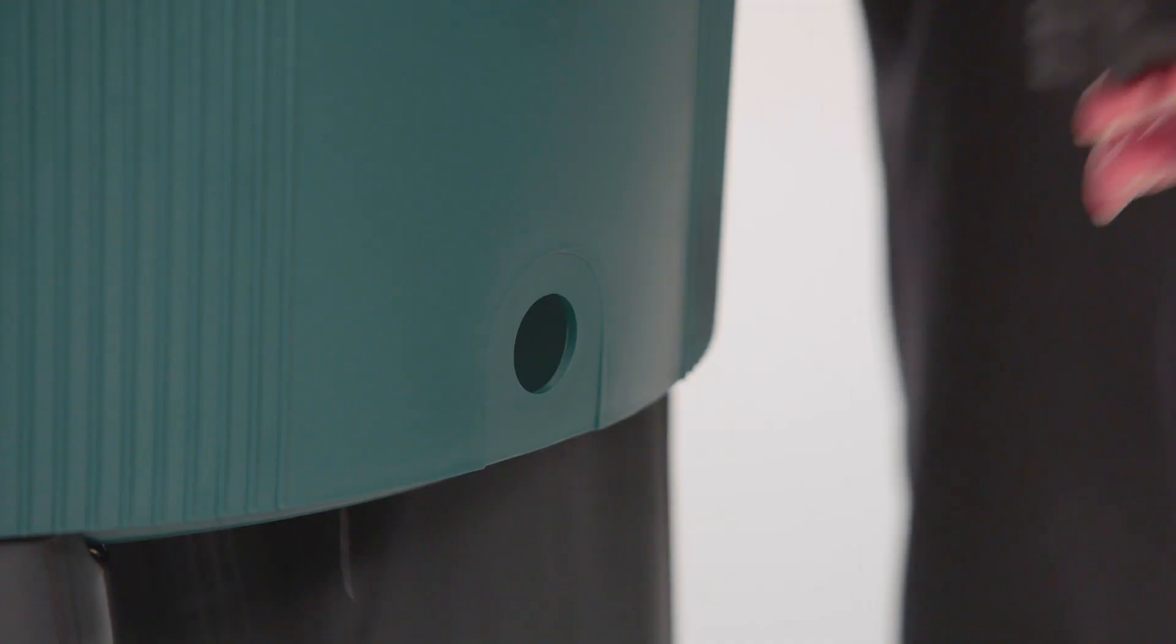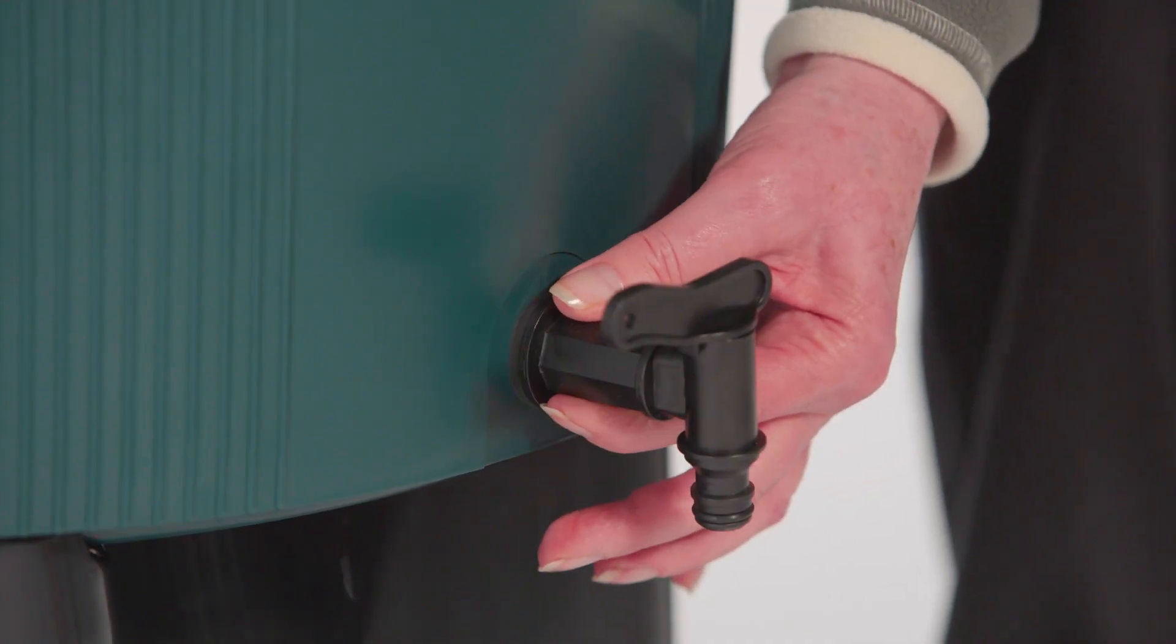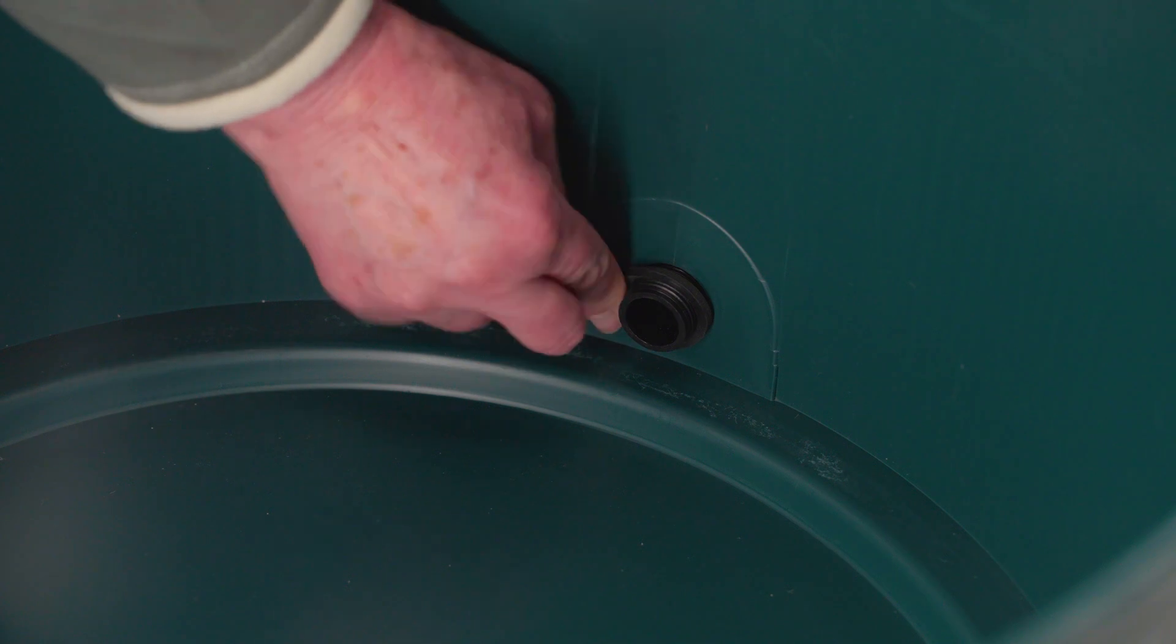Undo the nut and washers. Place either side of the hole. Hand tighten to ensure the tap won't leak when the butt is full of water.